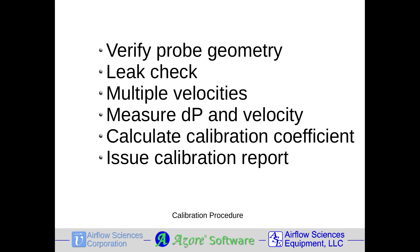First, the probe geometry is verified against EPA standards and a leak check is completed. Once the test setup is confirmed to have the correct geometry and be leak-free, the pressure measurement instrumentation is zeroed and then the wind tunnel is turned on. The calibration is generally performed at multiple velocities with three runs required at each velocity setting to verify repeatability. The key measurements are the probe differential pressure and the wind tunnel velocity for each run. After each test, calculations are performed to determine the calibration coefficient, deviation from the mean, and other required values per EPA Method 2. Finally, a calibration report documenting the raw data and calculated values is completed.